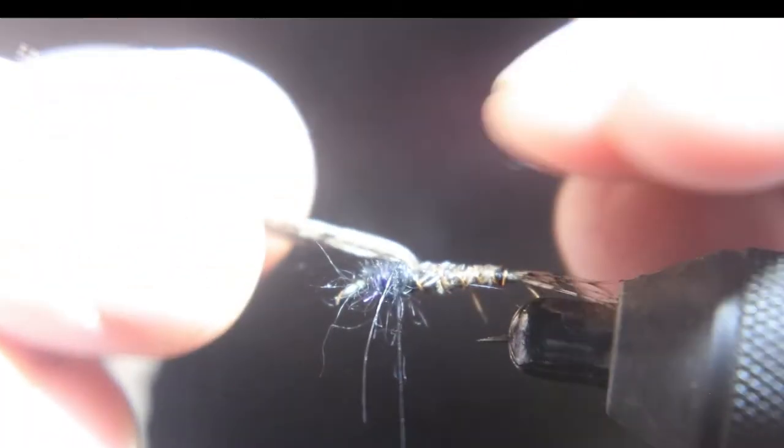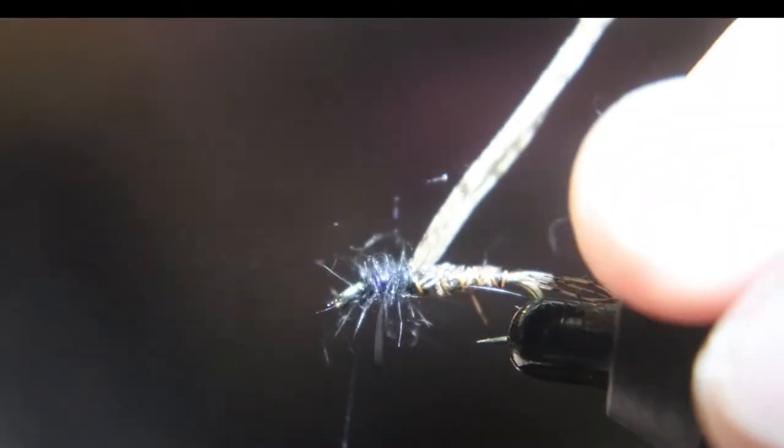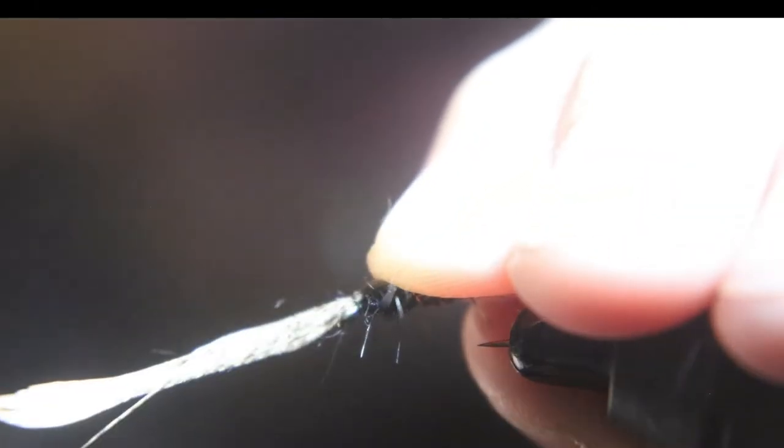Now we're going to take that pheasant tail, wrap it down over, create that shell, or your nymph skin over, and tie that down.